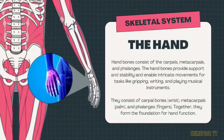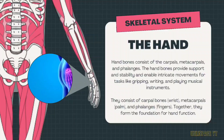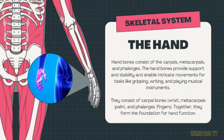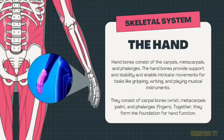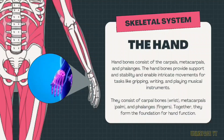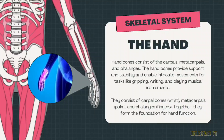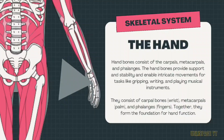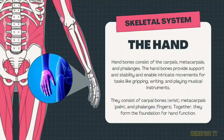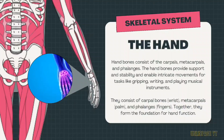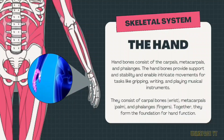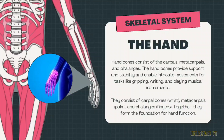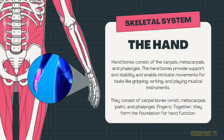The hand bones consist of the carpals, metacarpals, and phalanges, which form the fingers.